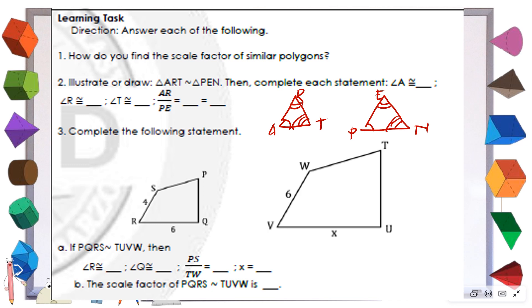Angle A is congruent with angle P. Then continue identifying which angle is congruent to angle R and which is congruent to angle T. On this part, we're going to find the proportional parts. We start with AR over PE, then RT over EN, and identify the other two parts to complete the proportionality.